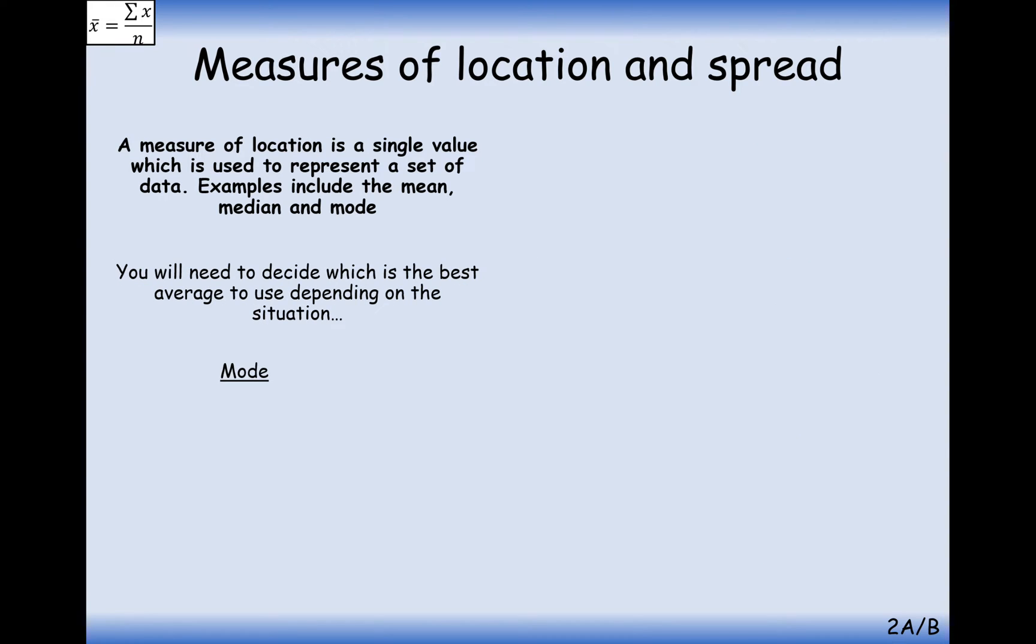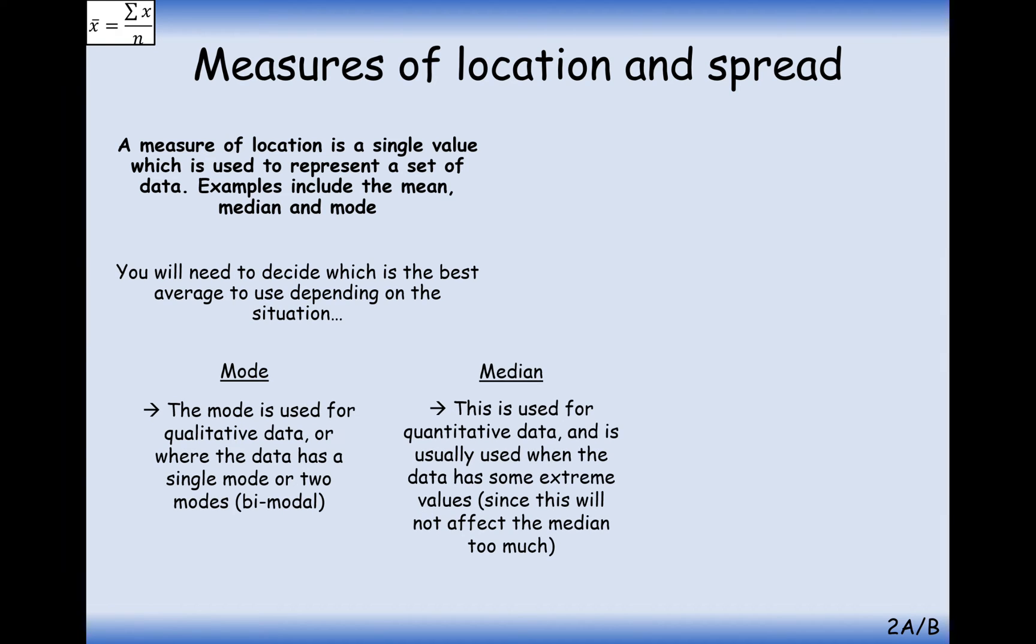Okay, so in different situations, you're going to need to be able to decide which average you're going to use and which one would be more appropriate to use in a certain situation. So let's go through the mode. The mode is used for qualitative data and where the data has a single mode or two modal values.